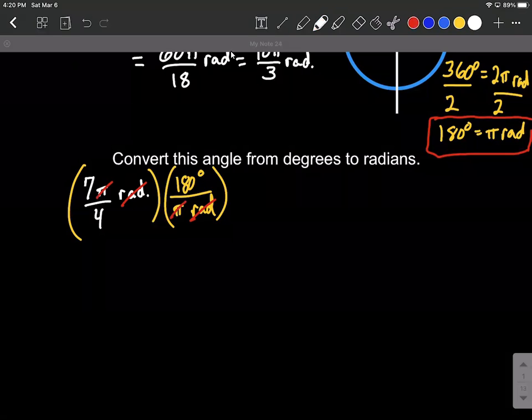And now as we multiply our numerators together, we have seven times 180 degrees, which gives us 1260 degrees. Over, we have four, and when we cancel things out, we can put ones in those spots. So four times one times one makes four.